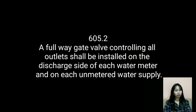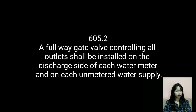In Section 605.2, a full-way gate valve controlling all outlets shall be installed on the discharge side of each water meter and on each unmetered water supply. Water supply piping supplying more than one building in any premise shall be equipped with a separate full-way gate valve to each building, so arranged that the water supply can be turned on or off to any individual or separate building. However, the supply piping to a single-family residence and its accessory building may be controlled by one gate valve.